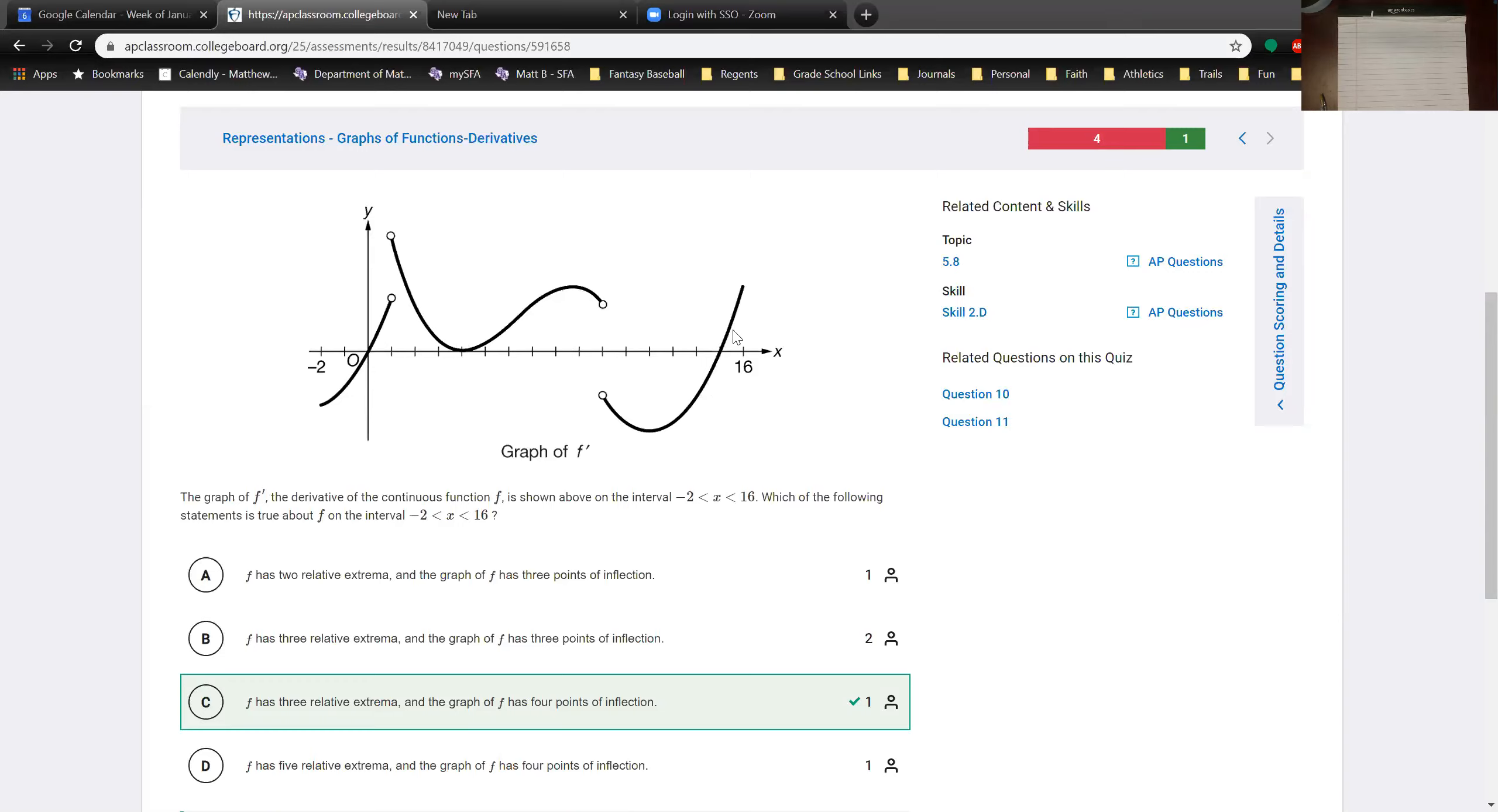So we have three relative extrema for the original function f, so immediately we're down to a 50-50 choice with b and c.